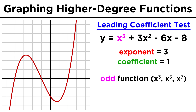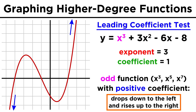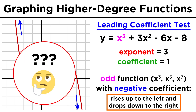If the exponent is odd, such as with a cubic function, or one that starts with X to the fifth, X to the seventh, and so forth: if the leading coefficient is positive, the function will fall downwards to the left and rise upwards to the right. If the leading coefficient is negative, the function will rise upwards to the left and fall downwards to the right. We don't yet know what will happen in the middle, but this end behavior is a great start in terms of sketching the function.